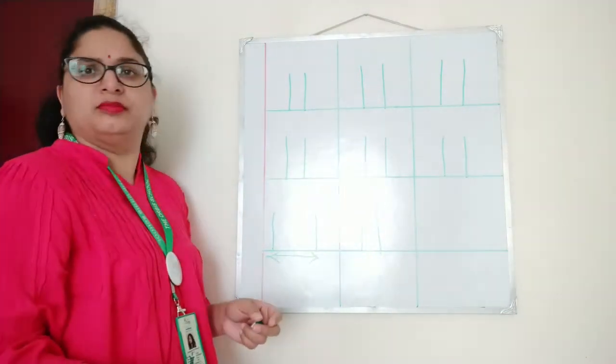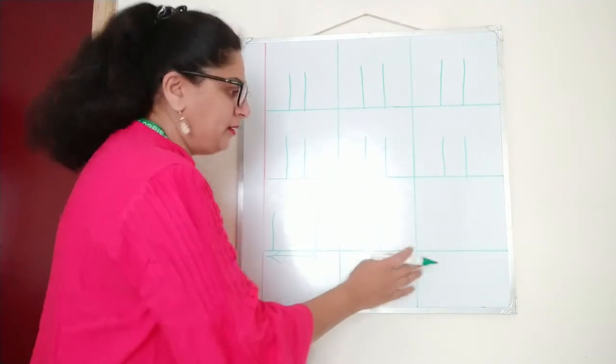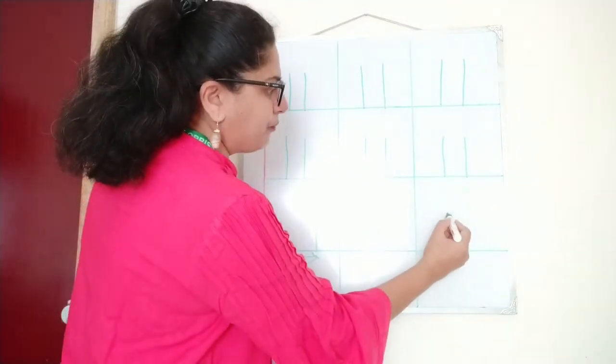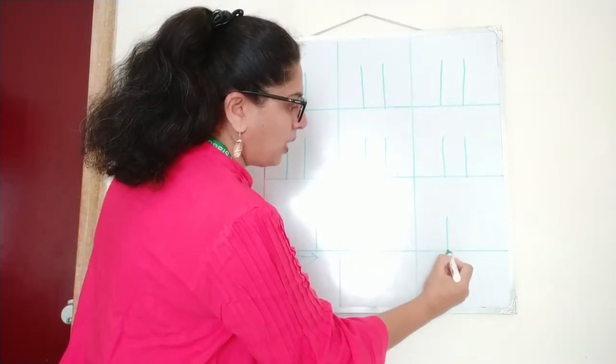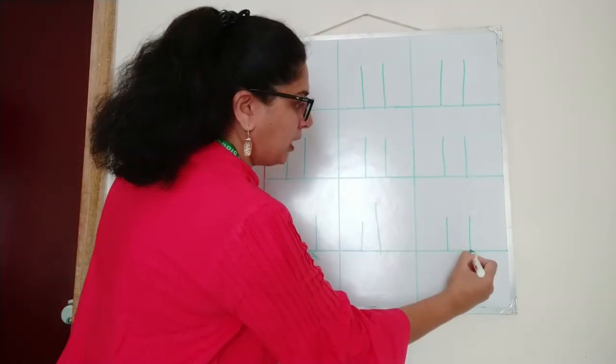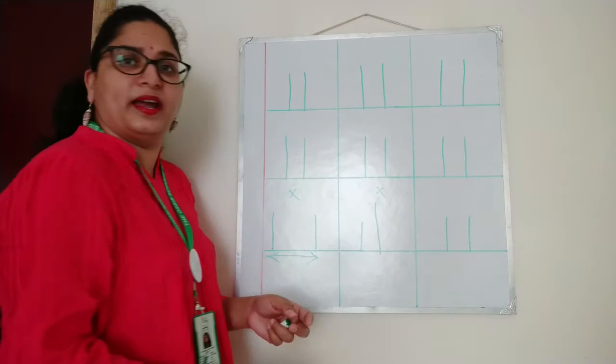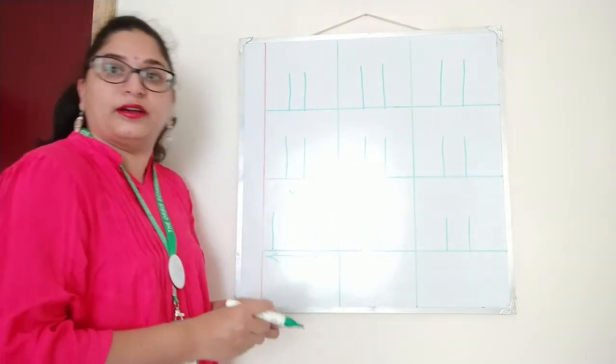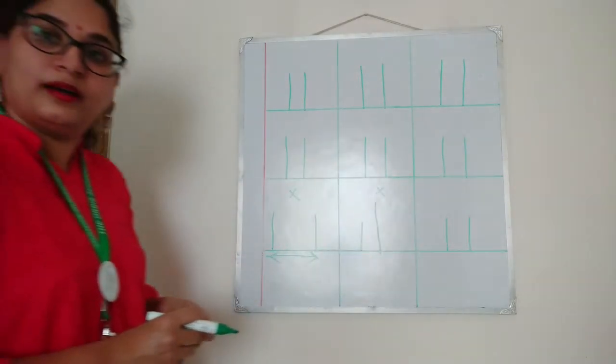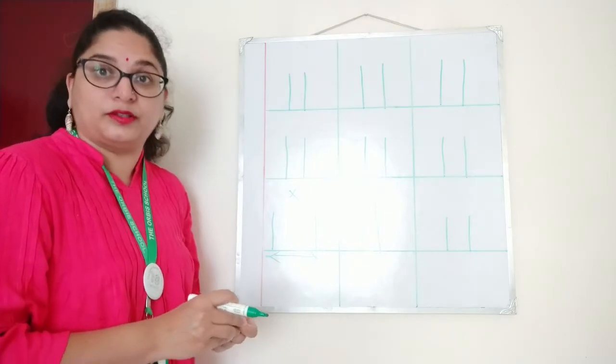And you will not write one small and one big. You write one, one, eleven. This is not the correct way to write.